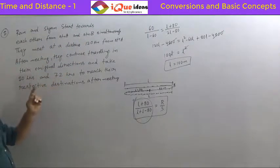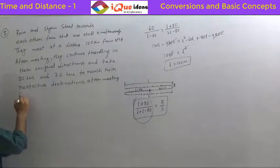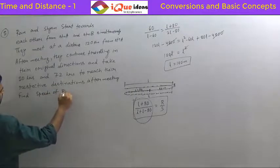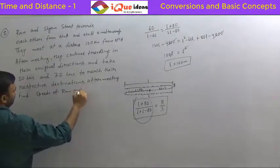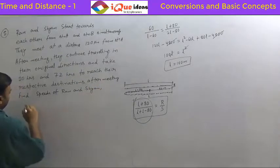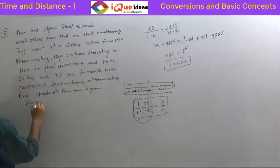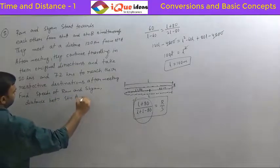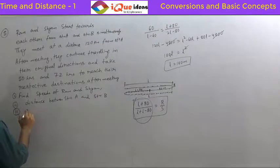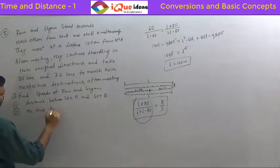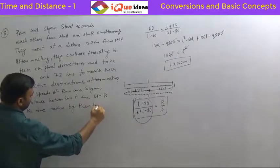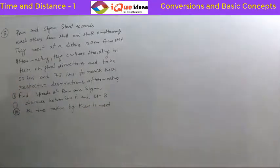So 50 hours and 72 hours are the times after meeting to travel their respective distances. We need to find: the speeds of Ram and Shyam, the distance between station A and station B, and the time taken by them to meet — that means from the beginning to the meeting point.